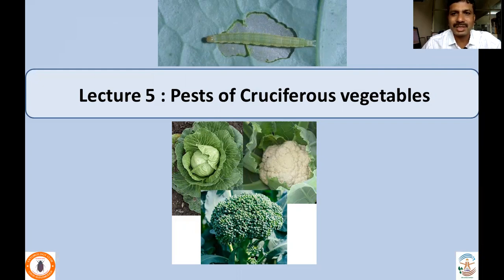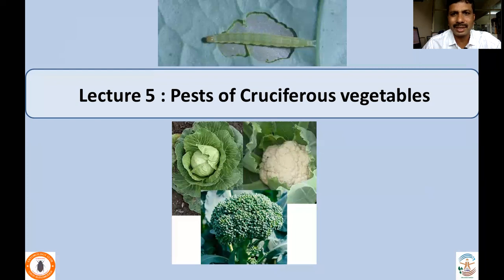The cruciferous vegetables are also called cole crops, which belong to family Brassicaceae. The important crops belonging to this Brassicaceae family include cabbage, cauliflower, turnip, broccoli, radish, wheat root, and many other crops. Cole crops are widely grown throughout the world both in temperate and tropical countries, and many insects are widely distributed and cause very serious losses to these crops.